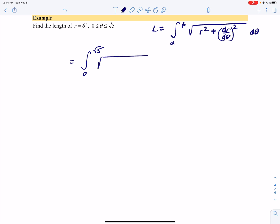We have the square root of—let's see, r is θ², so r² is θ⁴. The derivative of r with respect to θ is 2θ, so we have (2θ)². I'm going to rewrite this as (θ²)² just so we can see where things come from.